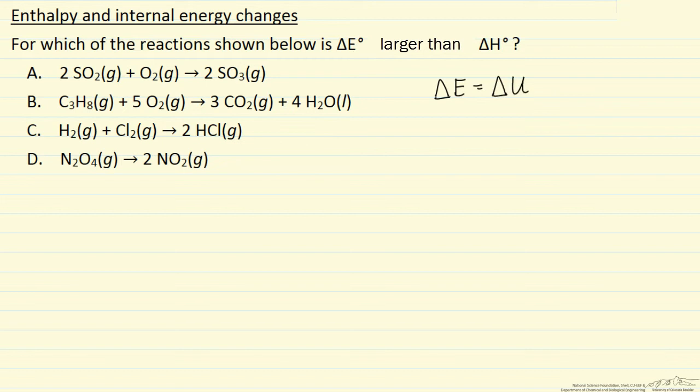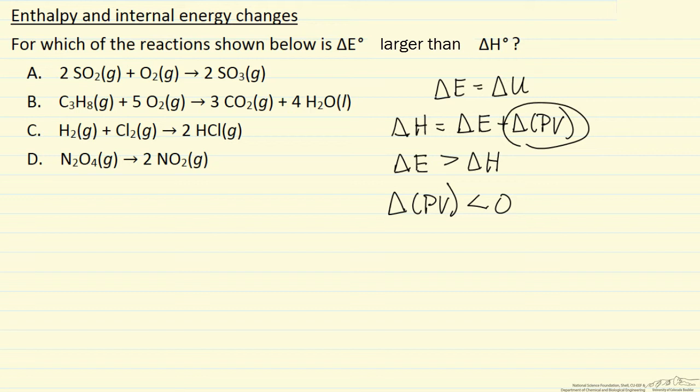Now delta H is defined as delta E plus delta PV. If we're asking when is delta E greater than delta H, that's the same thing as asking when is delta PV less than zero. In other words, we're adding this negative number to delta E, so we're going to get delta H smaller than delta E.